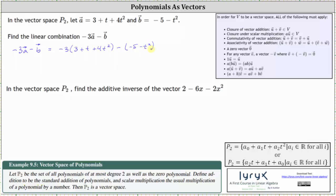And now we include the parentheses by multiplying, distributing -3, we have -9 - 3t - 12t². And if it's helpful, we can think of subtracting vector b, or subtracting the quantity -5 - t², as distributing a -1, which gives us +5 + t².